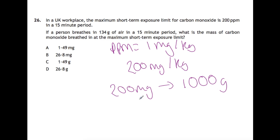Question 26. In a UK workplace, the maximum short-term exposure limit for carbon monoxide is 200 ppm in a 15-minute period. And we're trying to work out what is the mass of carbon monoxide breathed in a maximum short-term exposure limit. So ppm is equal to 1 milligram per kilogram. So if we've got 200, that is 200 milligrams per kilogram of air at the short-term exposure limit. So if we have 200 milligrams for 1000 grams of air, if we divide that both down by 1000 to get us to 1 gram, so we're going to have 0.2 milligrams for 1 gram. And then we're going to multiply back up by 134. So we've got 0.2 times 134. So for 134 grams, we would find that we'll have 26.8 milligrams of carbon monoxide being breathed in. So that is B.